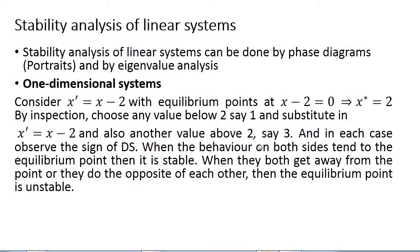When the behavior on both sides tends toward the equilibrium point, then it is stable. When both sides move away from the point, or they do not do the opposite of each other, then the equilibrium point is said to be unstable.